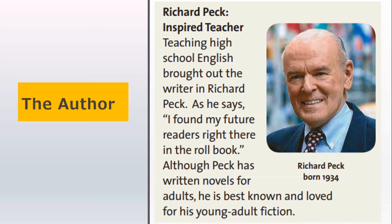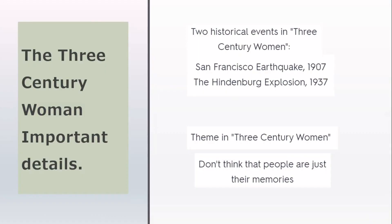The Three-Century Woman: important details. Two historical events appear in the story: the San Francisco earthquake of 1906 and the Hindenburg explosion in 1937. So even though it's a fictional story, there are two real historical events in it.